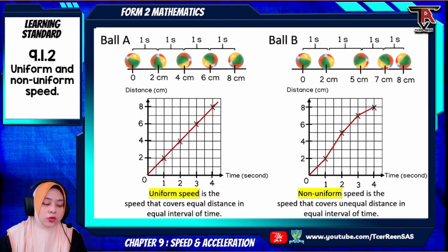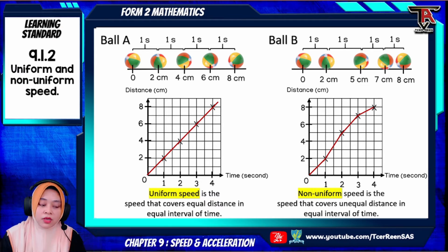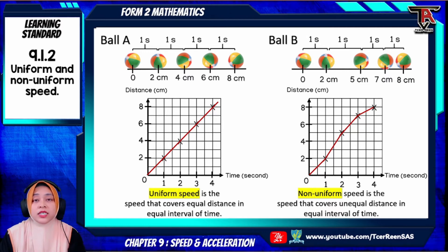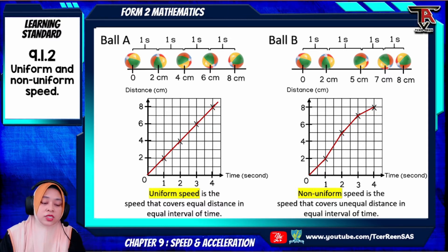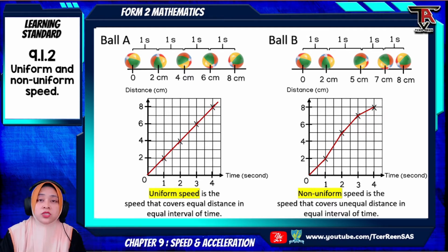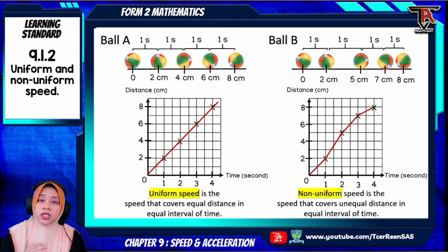For ball A, you can see in the first time interval — the first second — the ball is moving 2 cm. And for the next one second after that, also the ball is moving 2 cm, and so on. While ball B does not show the same trait. In the first one second it moves 2 cm, while in the second time interval — another one second — the ball moves 3 cm. So it shows that the speed is non-uniform.